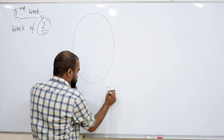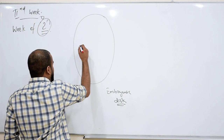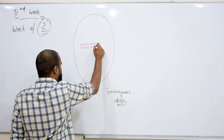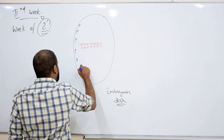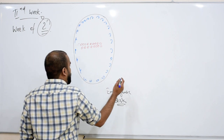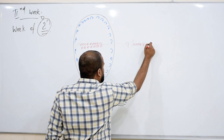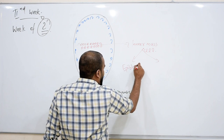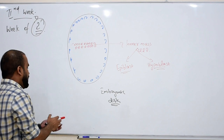In the embryonic disc, there will be development of two types of cells: inner cell mass and outer cell mass. From the inner cell mass — also called embryoblast — two structures arise: the epiblast and the hypoblast.